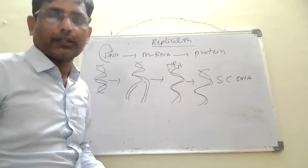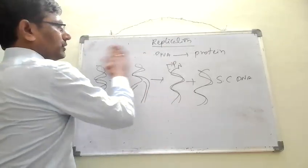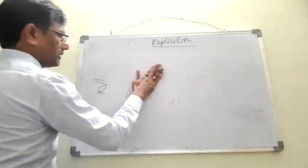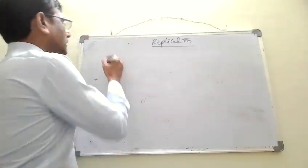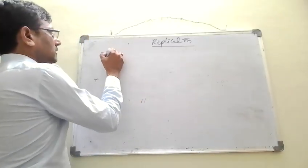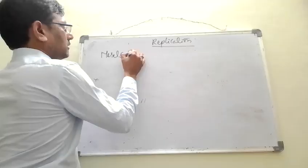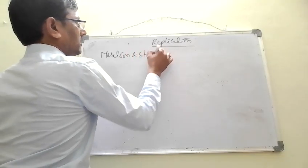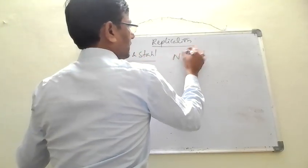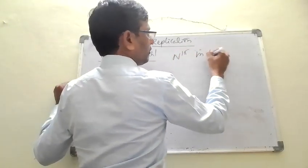Semi-conservative DNA replication was proved by the scientists Meselson and Stahl, by using N15 isotope in E. coli cells.